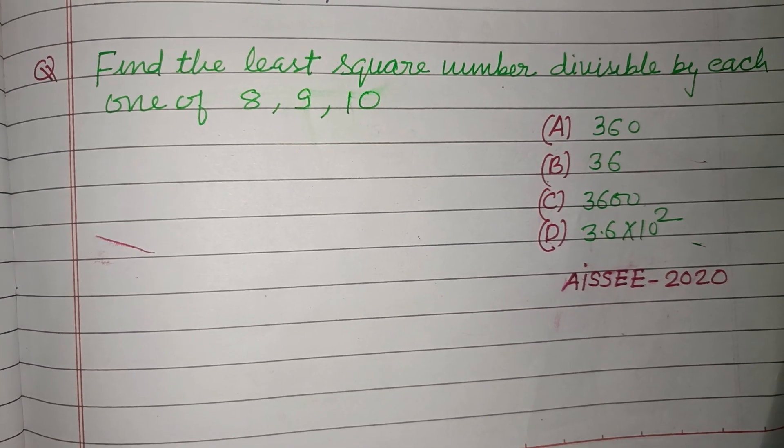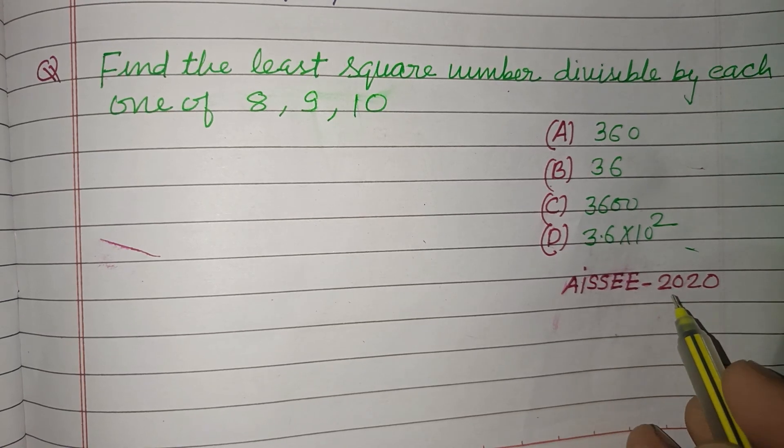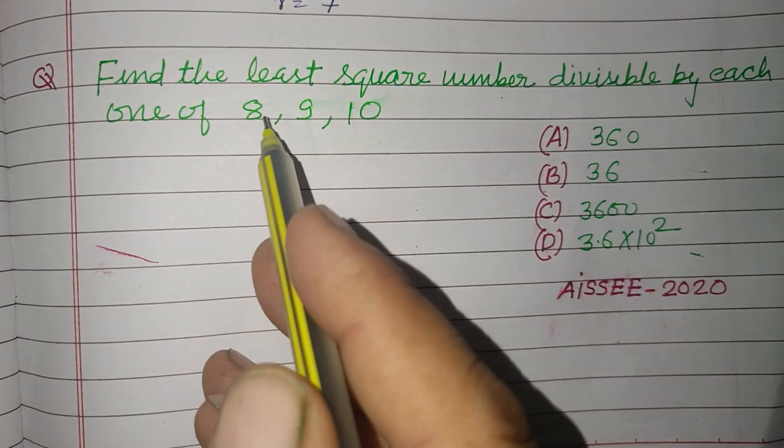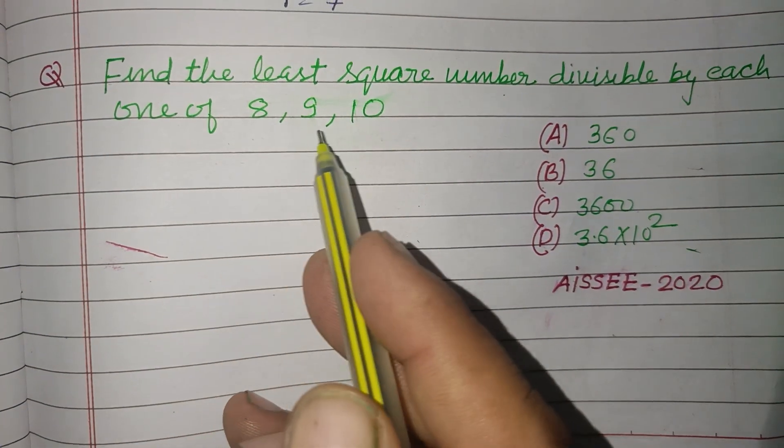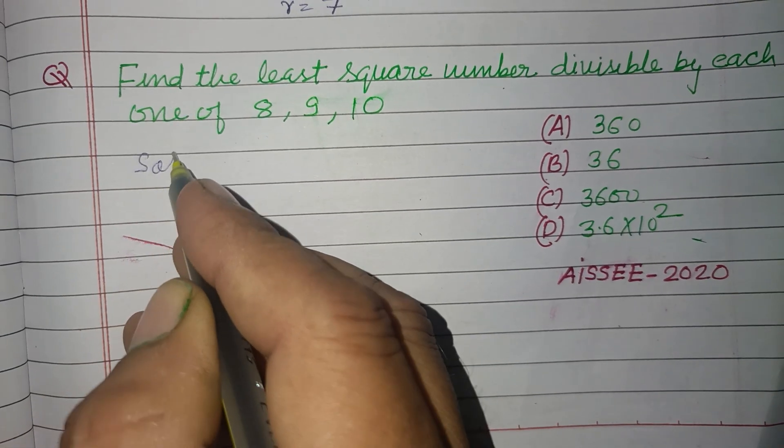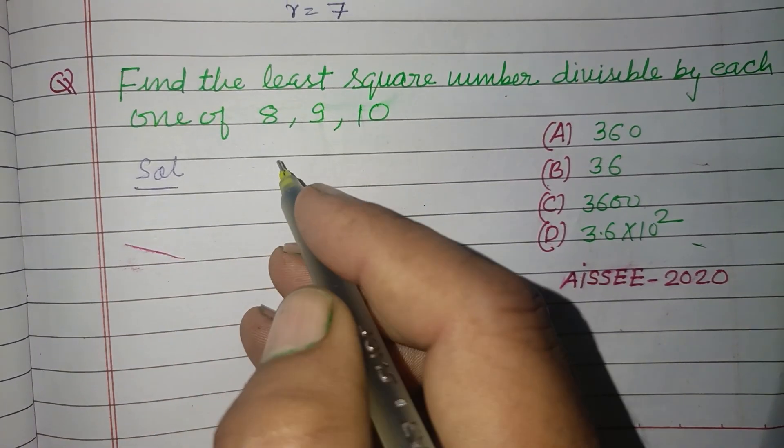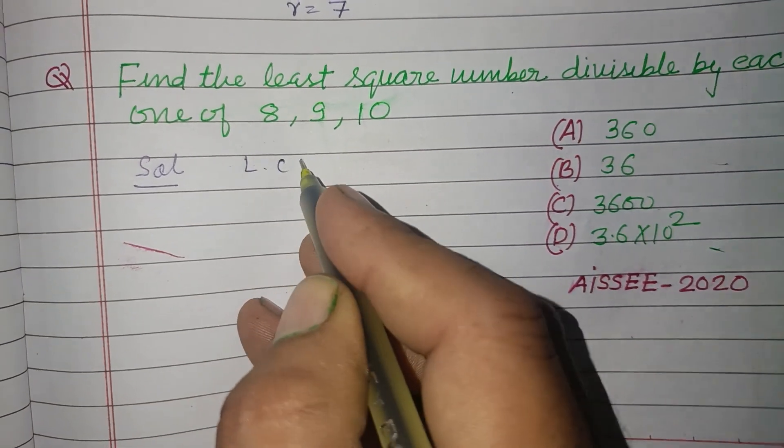Hello viewers, warm welcome to this YouTube channel. Question from All India Sainik School Entrance Exam 2020: find the least square number divisible by each of 8, 9, and 10. So students, here we find the LCM of 8, 9, and 10.